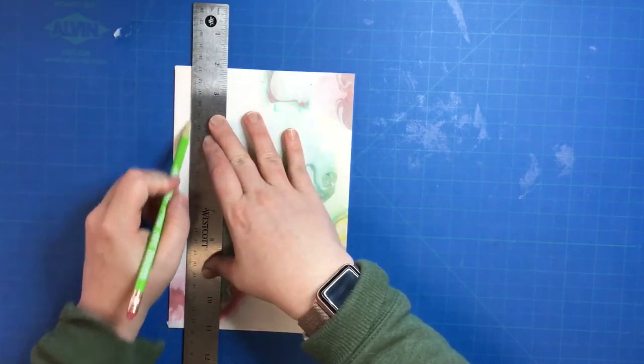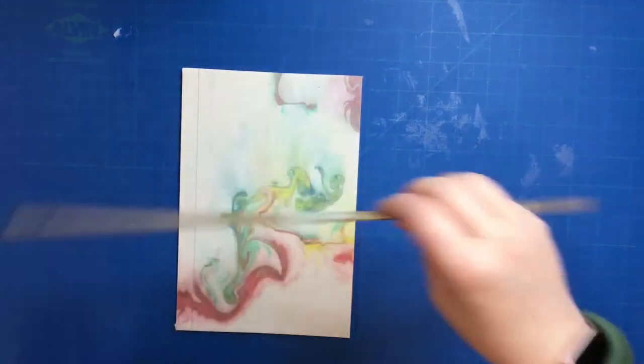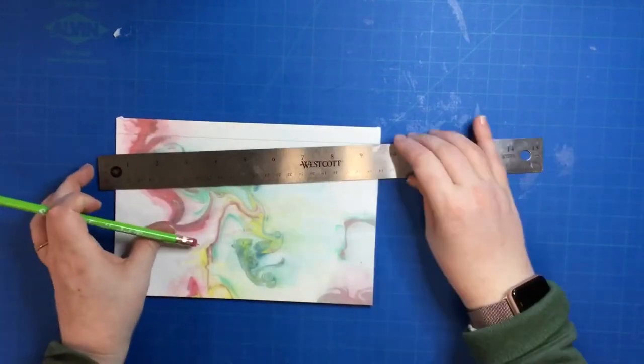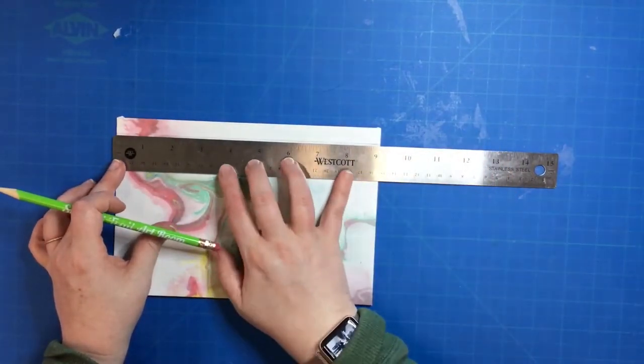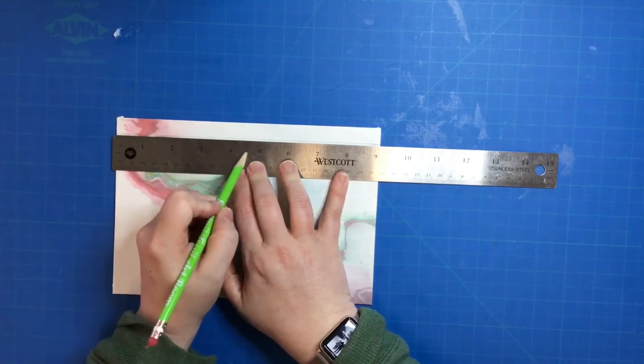Then measure at zero and your cover is going to be nine inches. Half of nine is four and a half inches, and then each inch and a half out from that, make a mark.